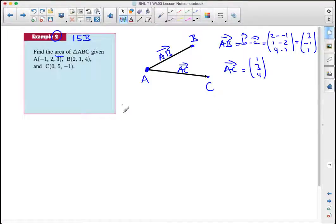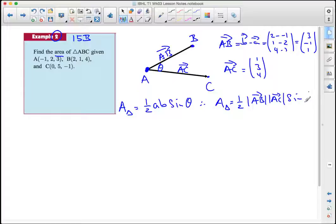Now the area of triangle is given to be one half AB and then the sine of theta in general. Here we can find theta because it's the angle between the two vectors and A and B are not vectors but in our case they are the length of AB and AC. So the area of our triangle is one half the length of AB, the length of AC, sine theta.